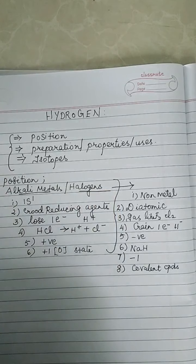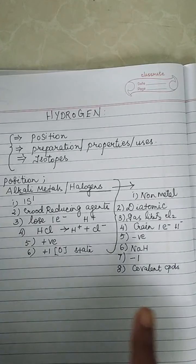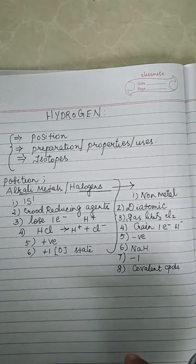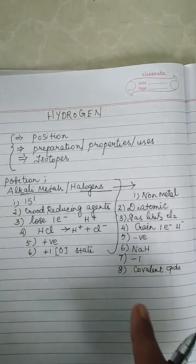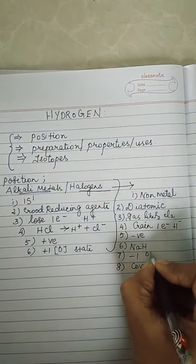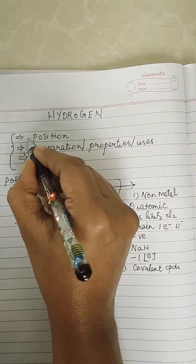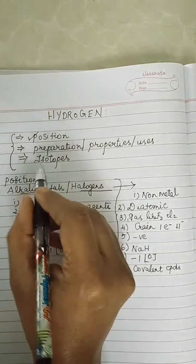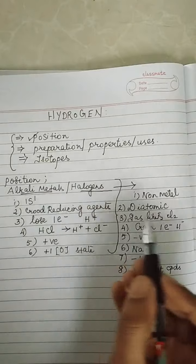The 8 properties are: it is a non-metal like halogens; it forms a diatomic molecule; it is a gas like fluorine and chlorine; it can gain one electron and become H⁻; it is electronegative; during electrolysis it is deposited at the anode; it shows a −1 oxidation state; and it can form covalent compounds like halogens. So we have completed the first point.